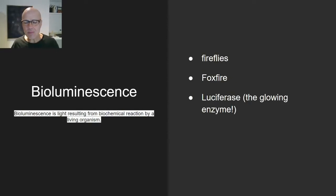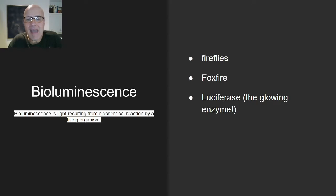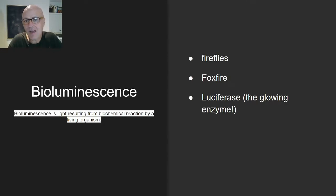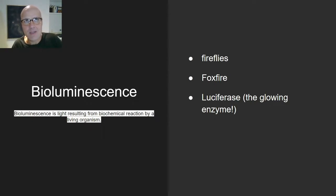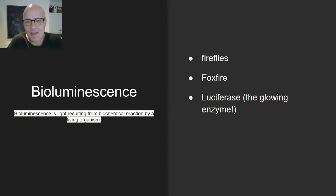Bioluminescence. Bioluminescence is chemiluminescence coming from a living thing — light resulting from a biochemical reaction by a living organism. So the difference is it comes from a living thing, such as fireflies. That is a very poor rendition of a song by the Tragically Hip. Fireflies — it's a good song. Great Canadian band. R.I.P. — that's for the lead singer.